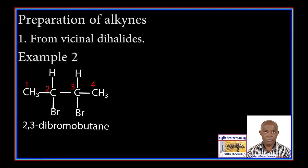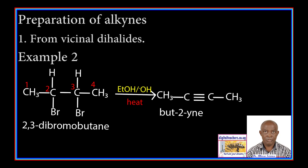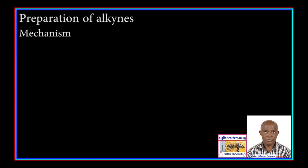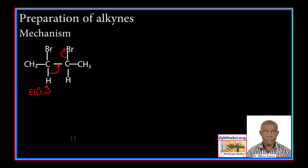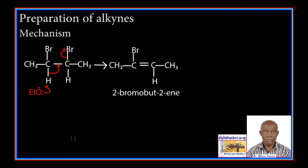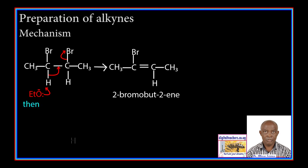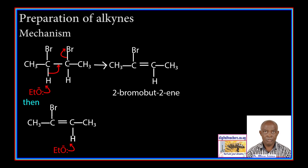Example 2: 2,3-dibromobutane reacts with hot ethanol in the presence of an alkali to form but-2-yne. In the mechanism, an ethoxide ion removes the hydrogen atom from one of the carbon atoms carrying the bromine atom. The double bond forms and the bond between bromine and the adjacent carbon atom breaks to form 2-bromobutene. Then a second ethoxide ion removes a hydrogen atom from the carbon atom originally carrying a bromine atom. The bond between that carbon atom and the bromine atom breaks to form but-2-yne.